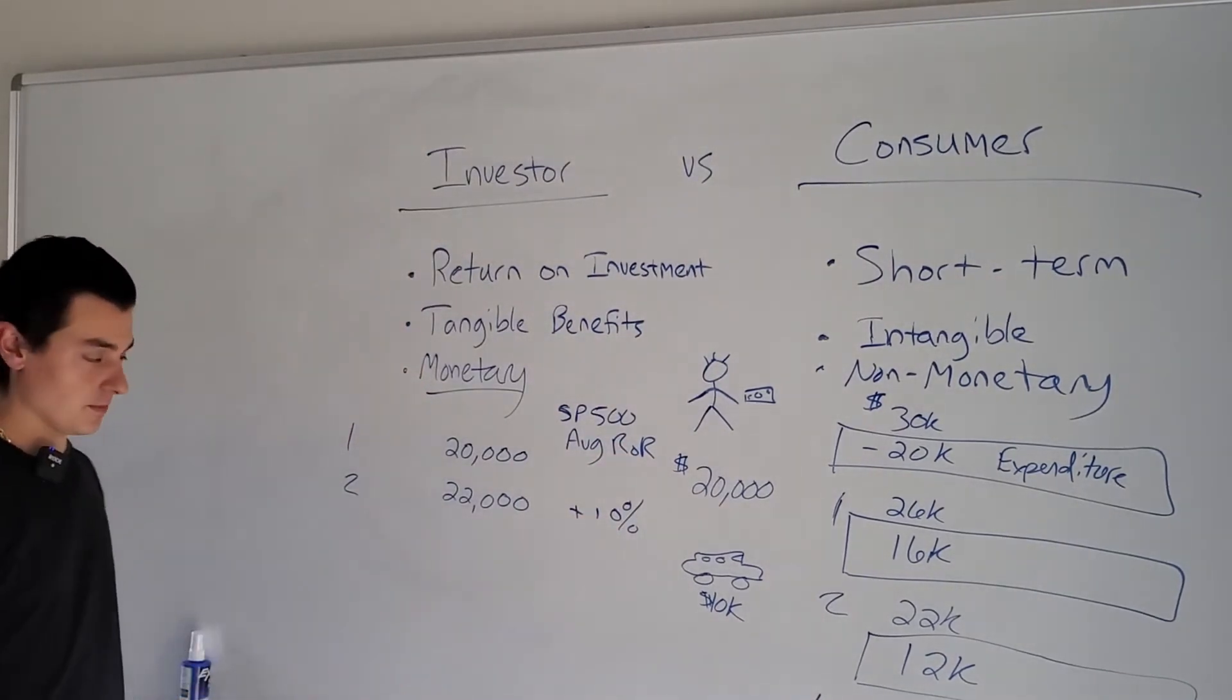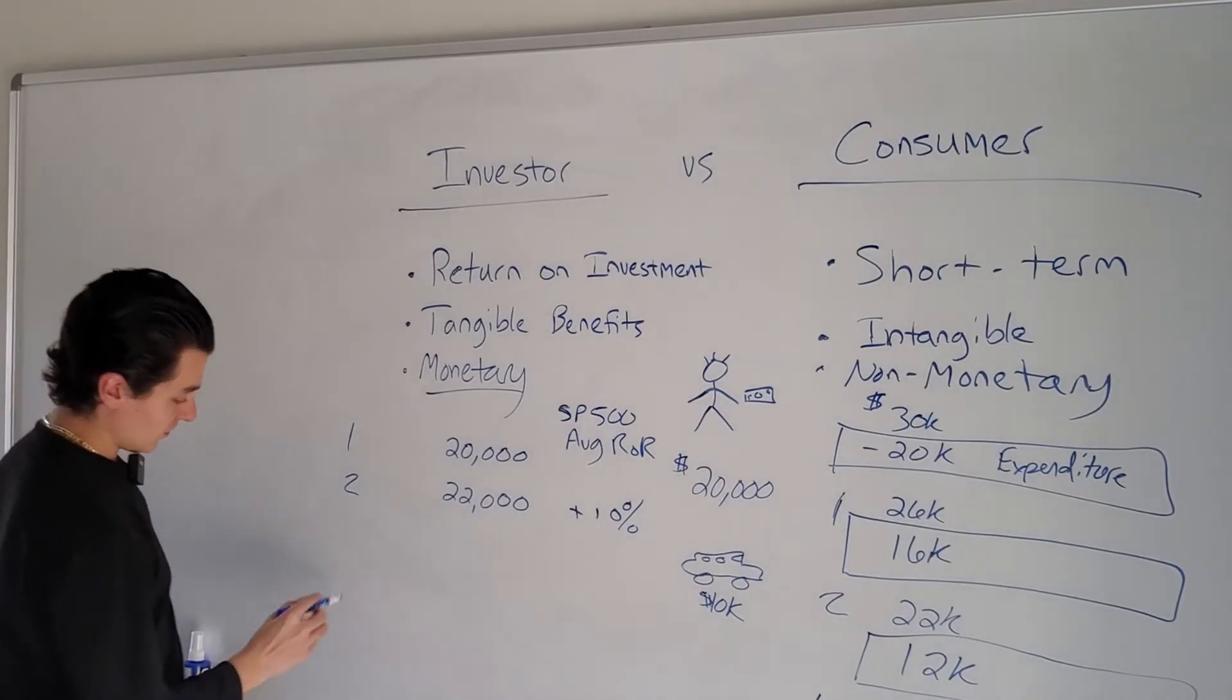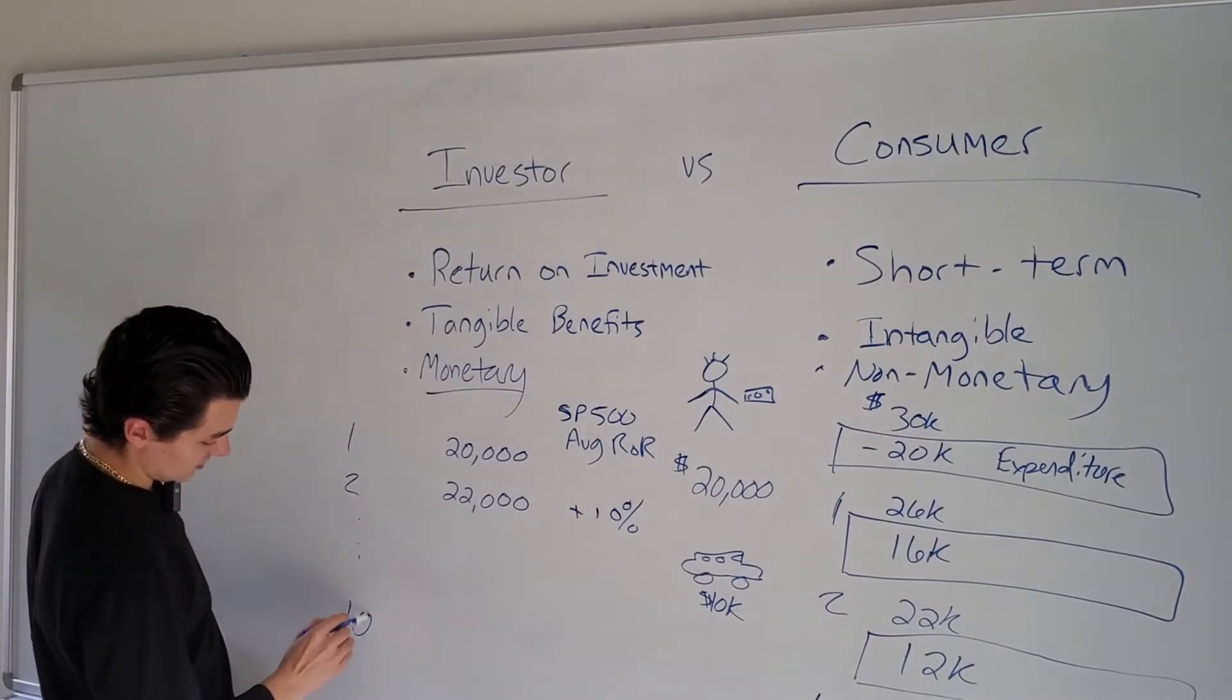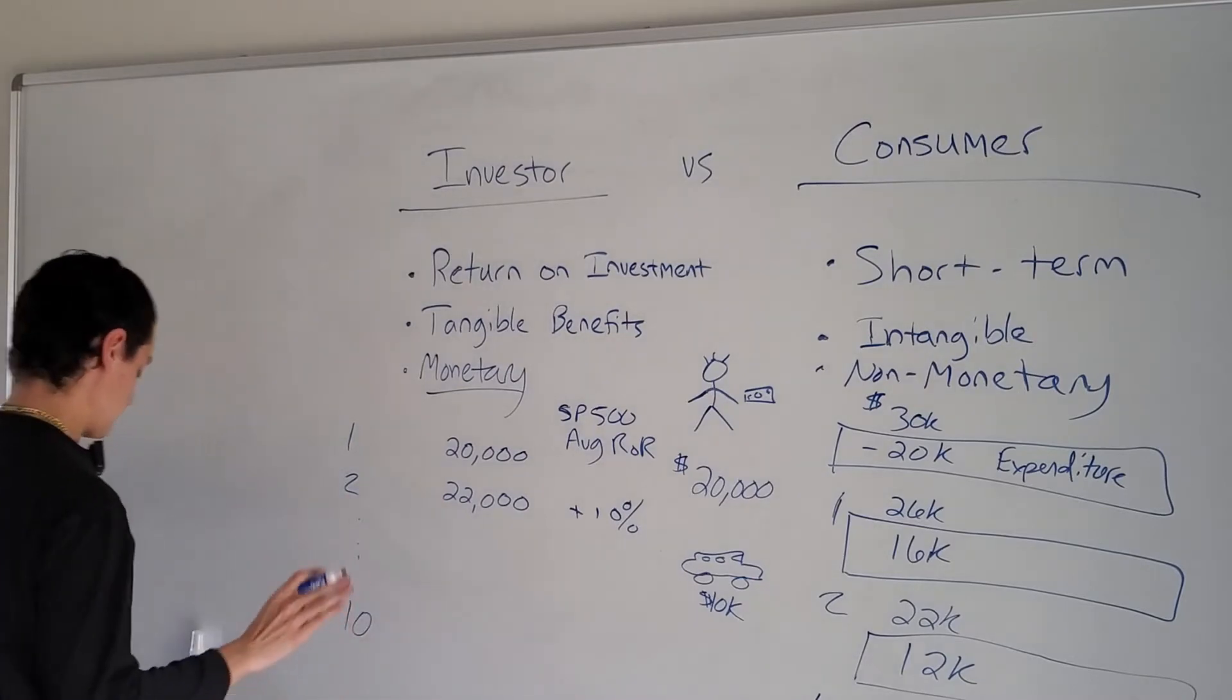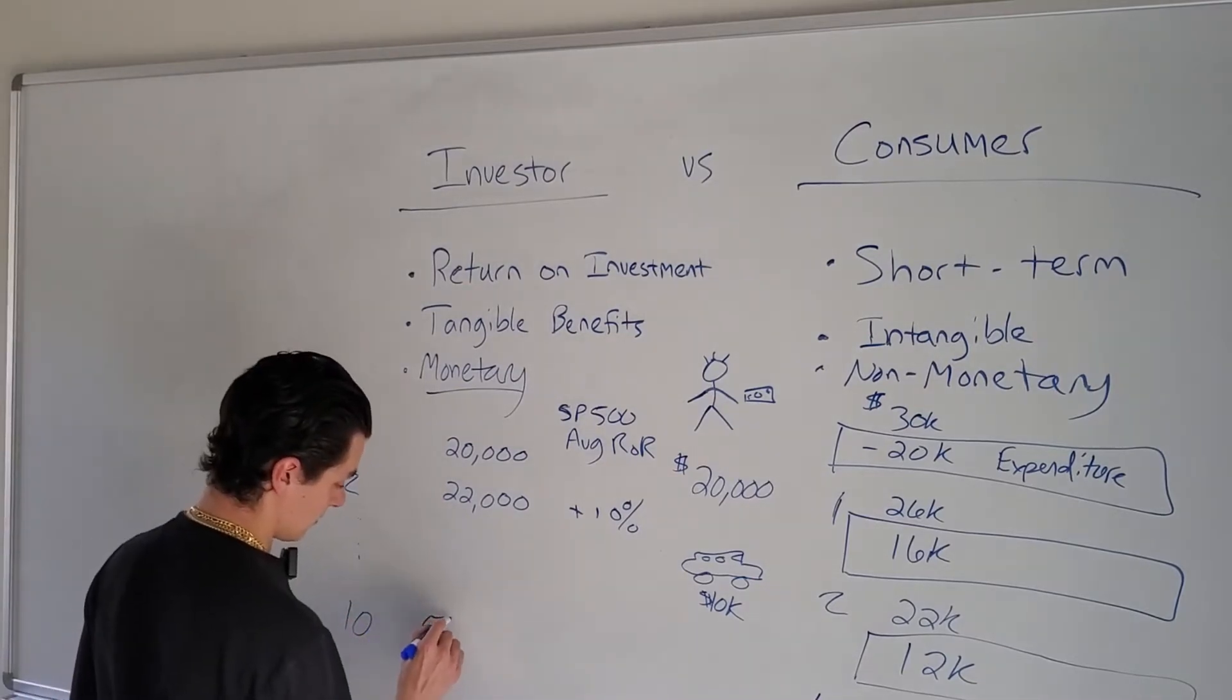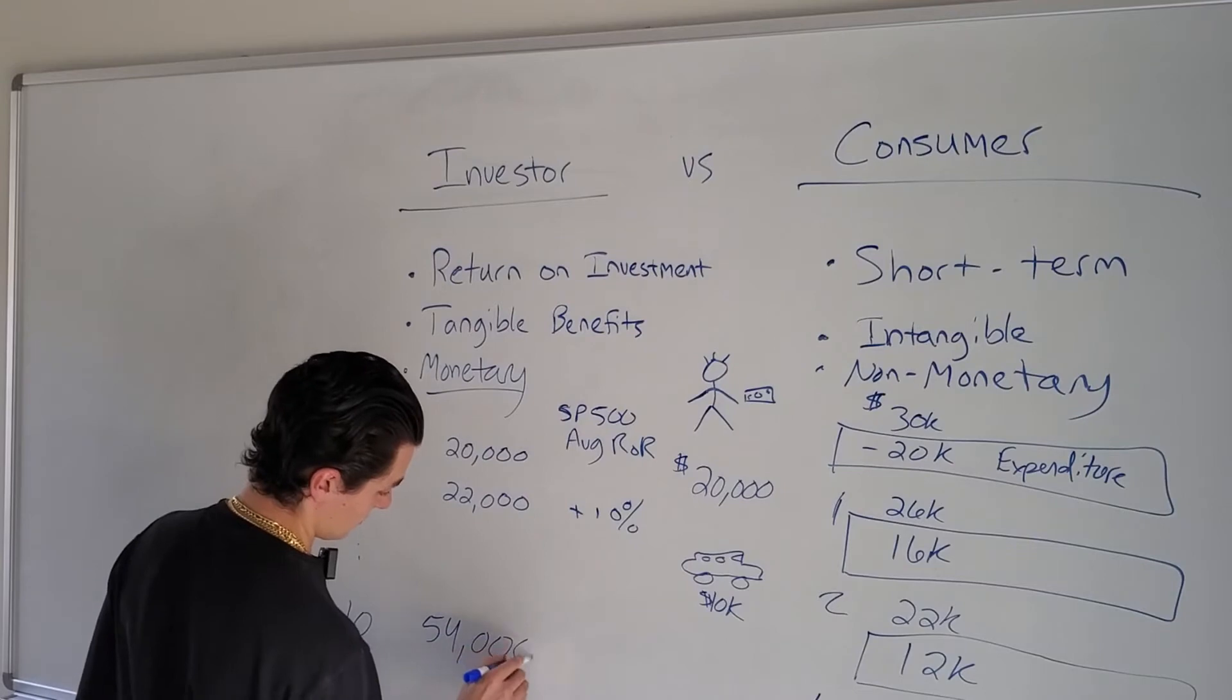Keep going down even further. We'll just keep going down to year 10. Over 10 years, this $20,000 initial investment has increased to $54,000 roughly.